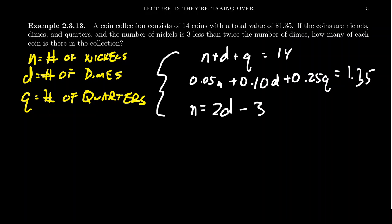The third equation is perfect for substitution. I'm going to substitute n by plugging in 2d minus 3. So for the first equation, (2d - 3) plus d plus q equals 14. Combining like terms, 3d plus q equals 17.